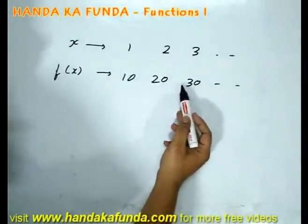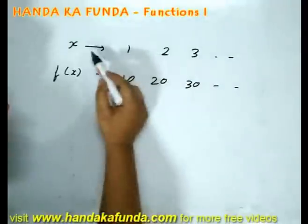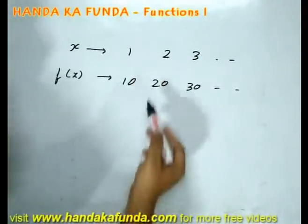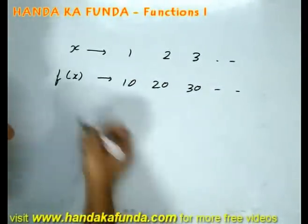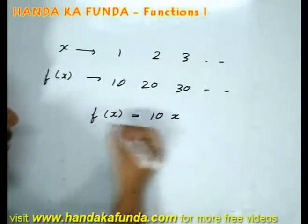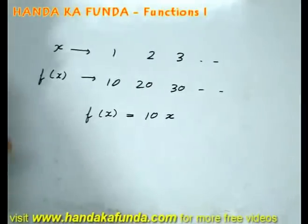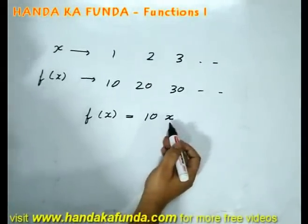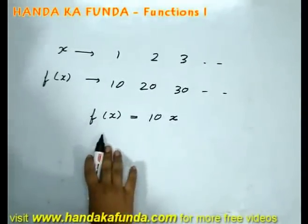It is known as the dependent variable because it depends on the value of x or on the value of the independent variable. What is the relationship here? The relationship here is f equals 10x, or 10 times the independent variable will be the value of the dependent variable.